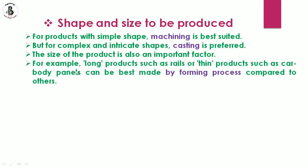For example, long products such as rails, or thin products such as car body panels, can best be made by a forming process compared to other processes. In summary, the main production processes include: machining (conventional, non-conventional, and advanced cutting), casting (for large or integrated shapes), powder metallurgy, and forming or shape-changing processes.